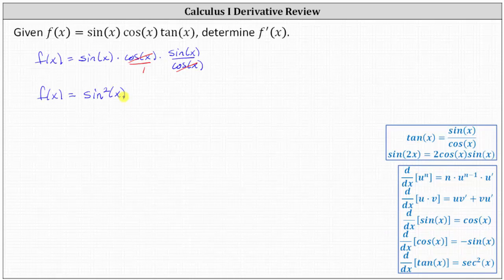But to find the derivative, it will be helpful to think of this as the square of sin(x). Notice f(x) is a composite function, and therefore to find the derivative, we will have to apply the chain rule. The inner function is sin(x), and the outer function is a squaring function.